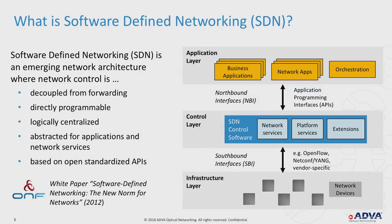What is software-defined networking? This is a general emerging network architecture where network control is decoupled from forwarding, directly programmable, logically centralized, and abstracted for applications and network services — based on open and standardized APIs. This definition is from the Open Networking Foundation, the group that took on the banner to standardize activities around SDN.